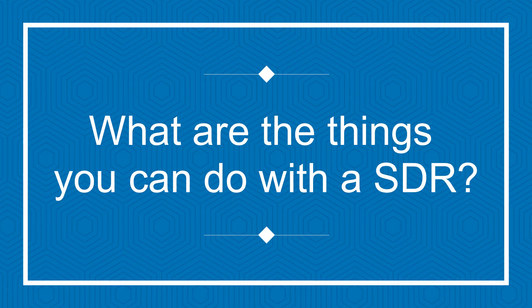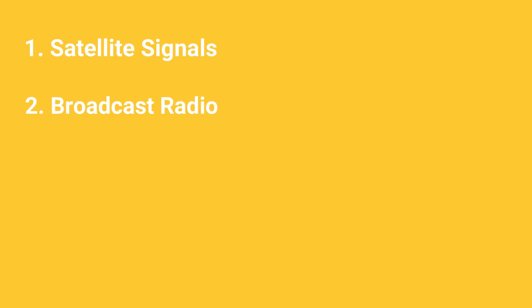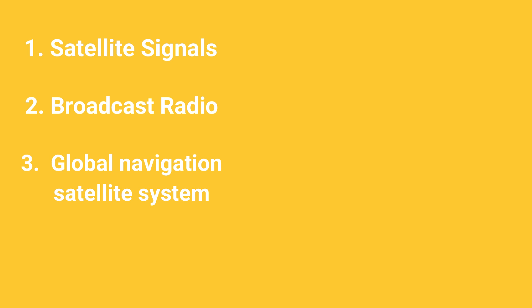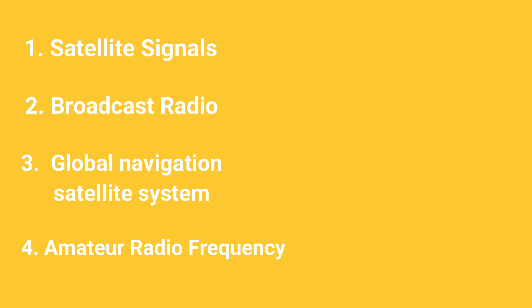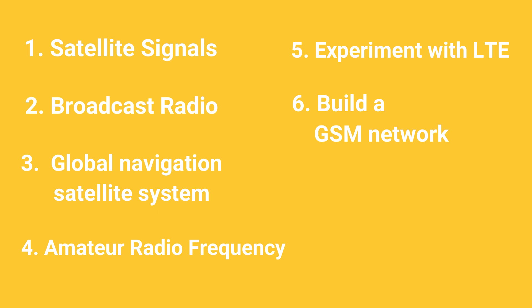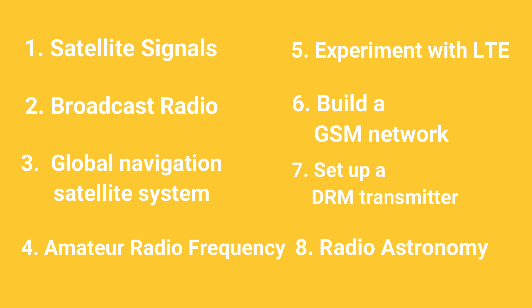What are the things you can do with an SDR? By the help of an SDR, you can do a variety of things: receive satellite signals, receive broadcast radio, learn how the global navigation satellite system works, listen to amateur radio frequencies, experiment with LTE, build a GSM network, set up a DRM transmitter, and you can also do radio astronomy.